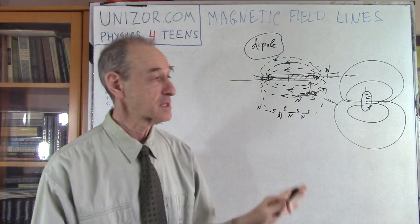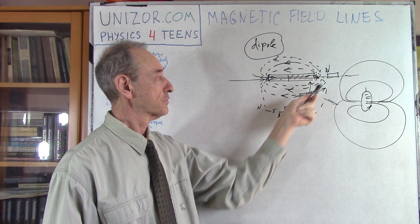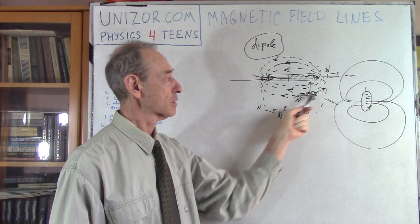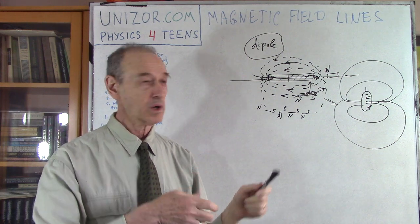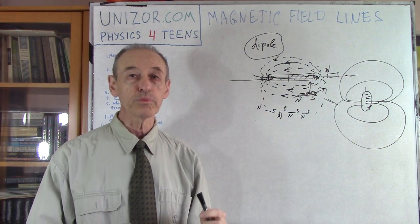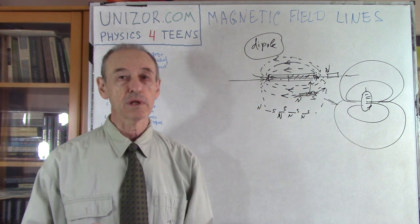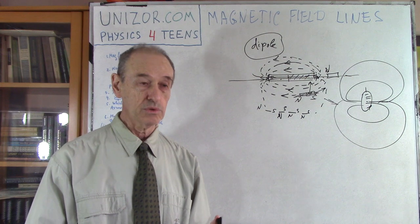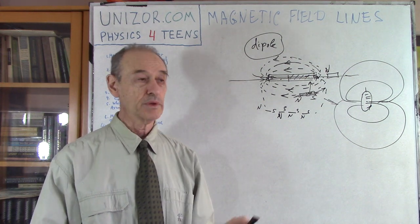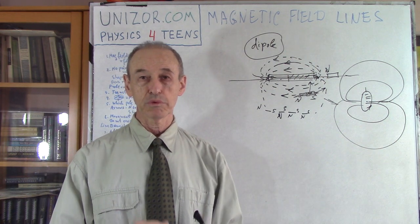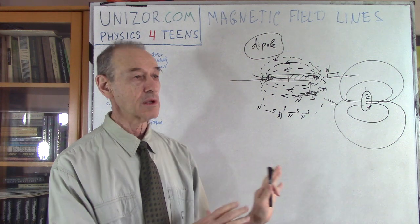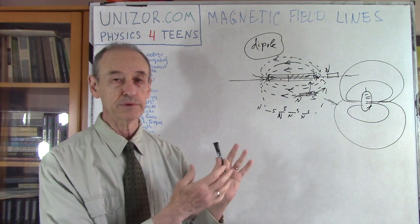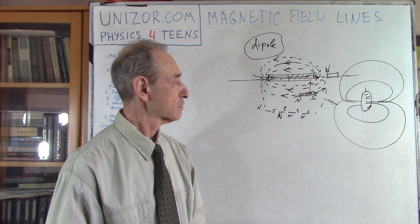So basically, this lecture was about the direction of movement — which means the direction of the forces. There is a force going along the magnetic line, and there is a torque which turns the probe object to have a position tangential to the line. This is about the direction of magnetic forces around the permanent magnet. Magnitude will be covered in the next lecture. For now, we concentrated on the geometrical properties of the magnetic field.